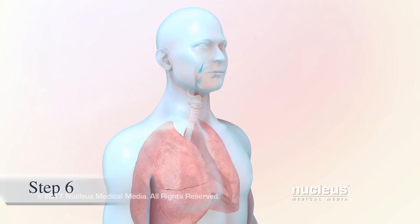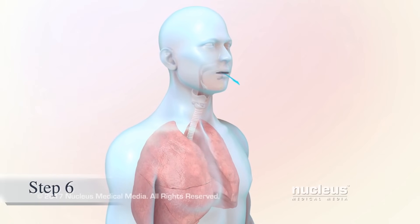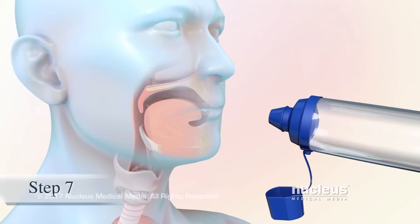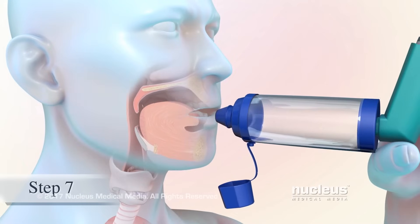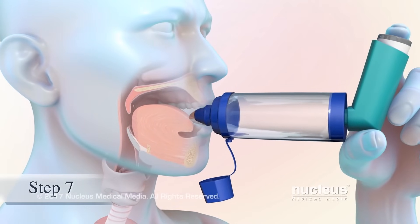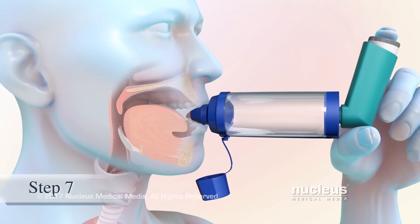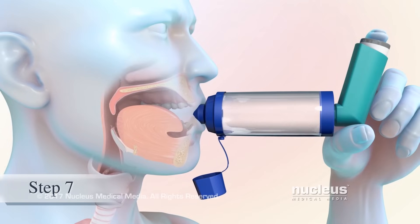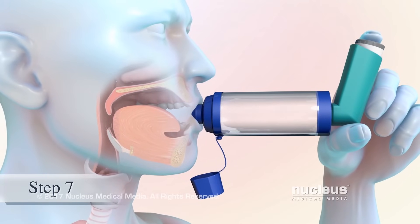Breathe in deeply and breathe out completely to empty your lungs. Put the spacer's mouthpiece in your mouth between your teeth and above your tongue. Then, close your lips around the mouthpiece to form a tight seal.